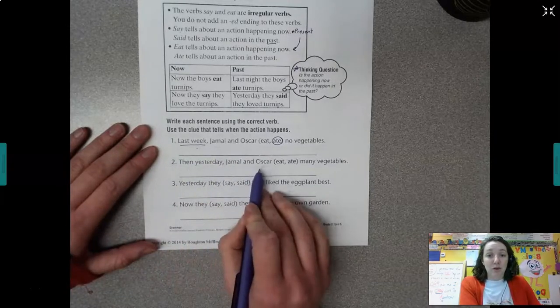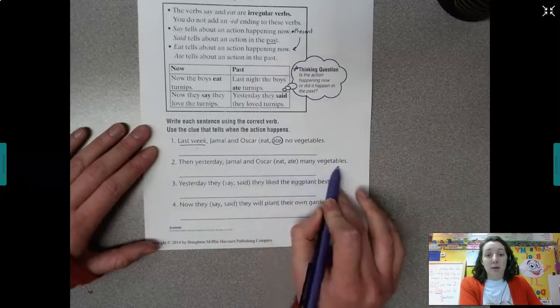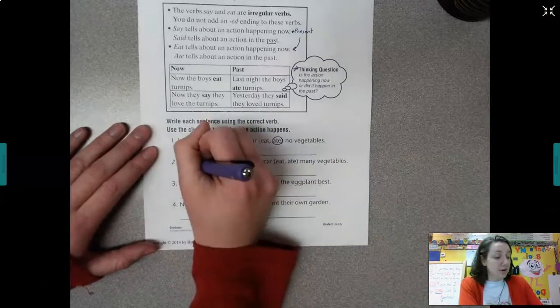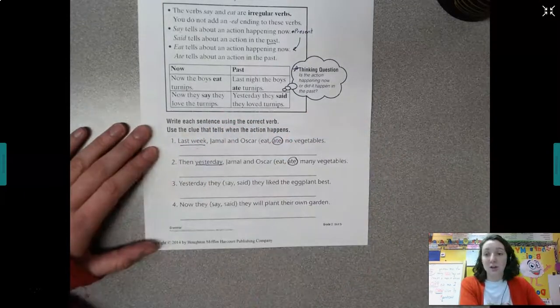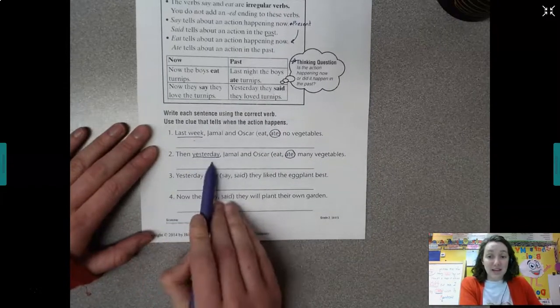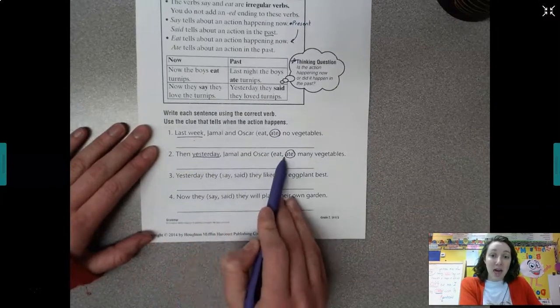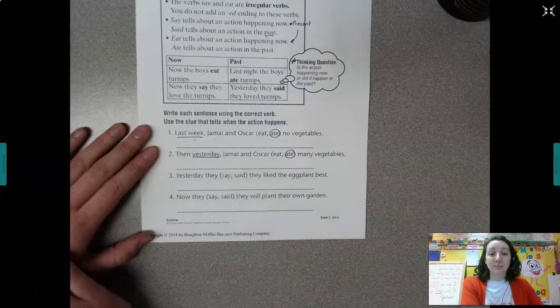Then, yesterday, Jamal and Oscar, what many vegetables? Well, yesterday again tells me the past, so it's going to be ate. And let's just read it and check our work. Then, yesterday, Jamal and Oscar ate many vegetables.